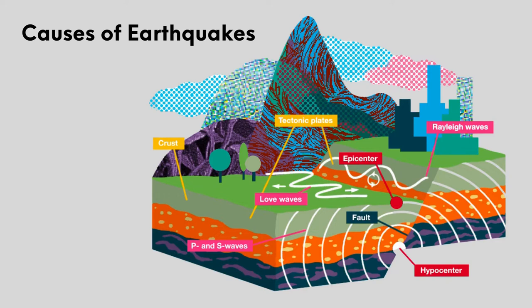Tectonic plates will break apart or crash together. The crust will either bend upwards or downwards. Sometimes this motion happens in the sea, and other than causing an earthquake, it also forms a tsunami.